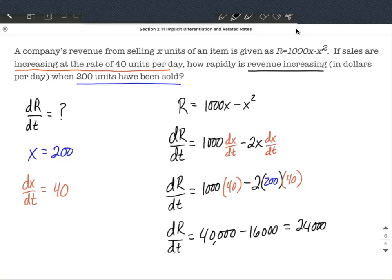And let's think about our units. Okay, so we were increasing the 40 units per day. So in each one of those spots we get units per day, but then that's going to be multiplied by the 200, which was number of units.